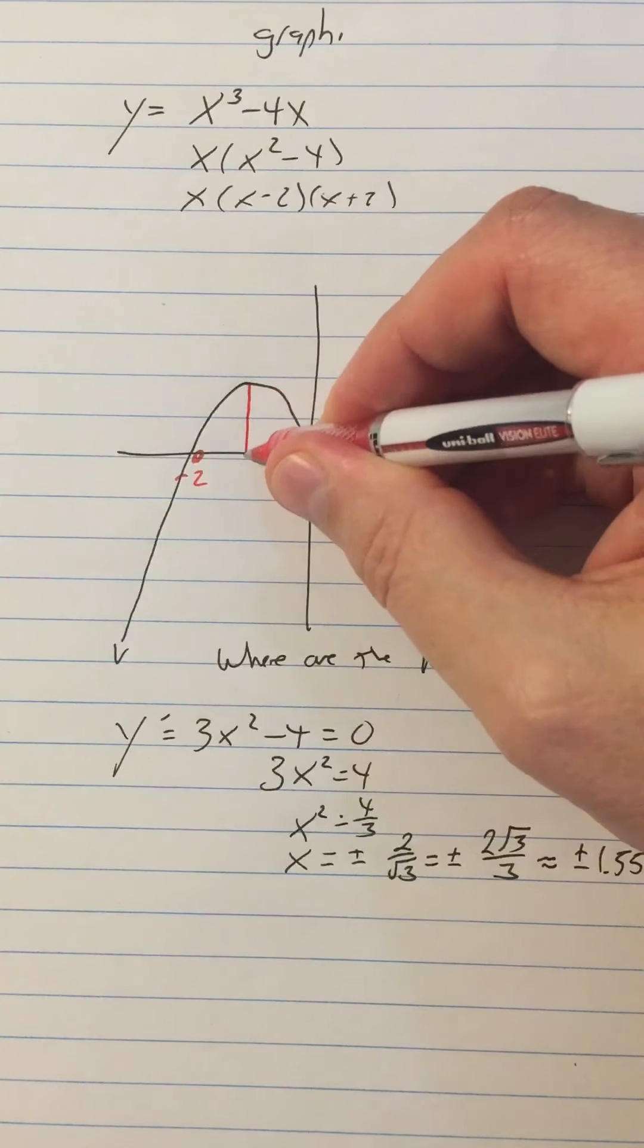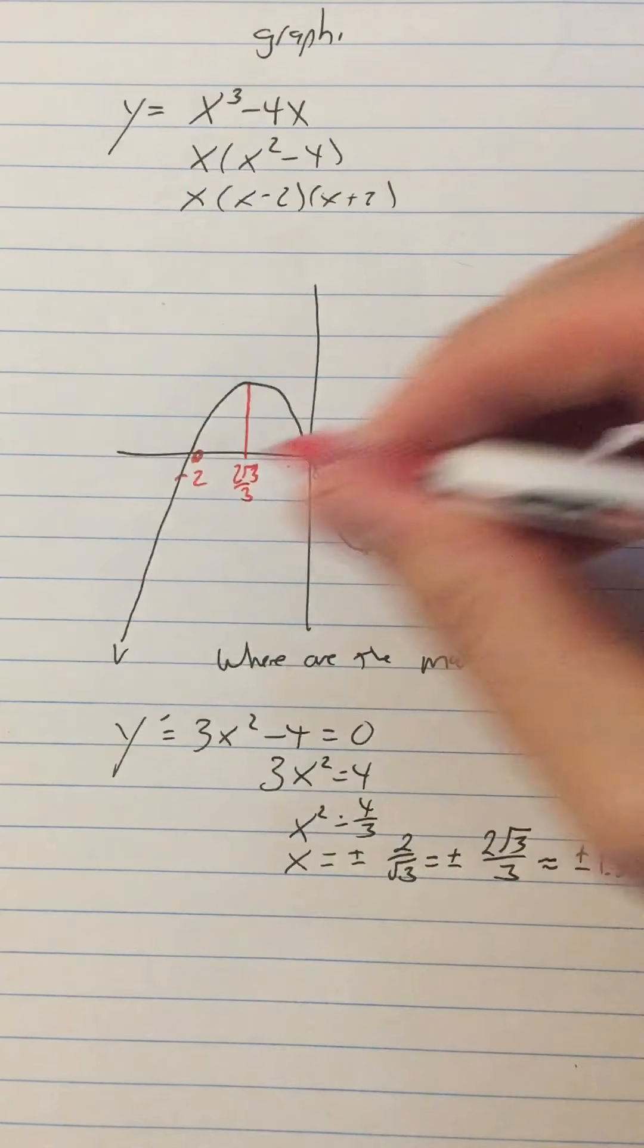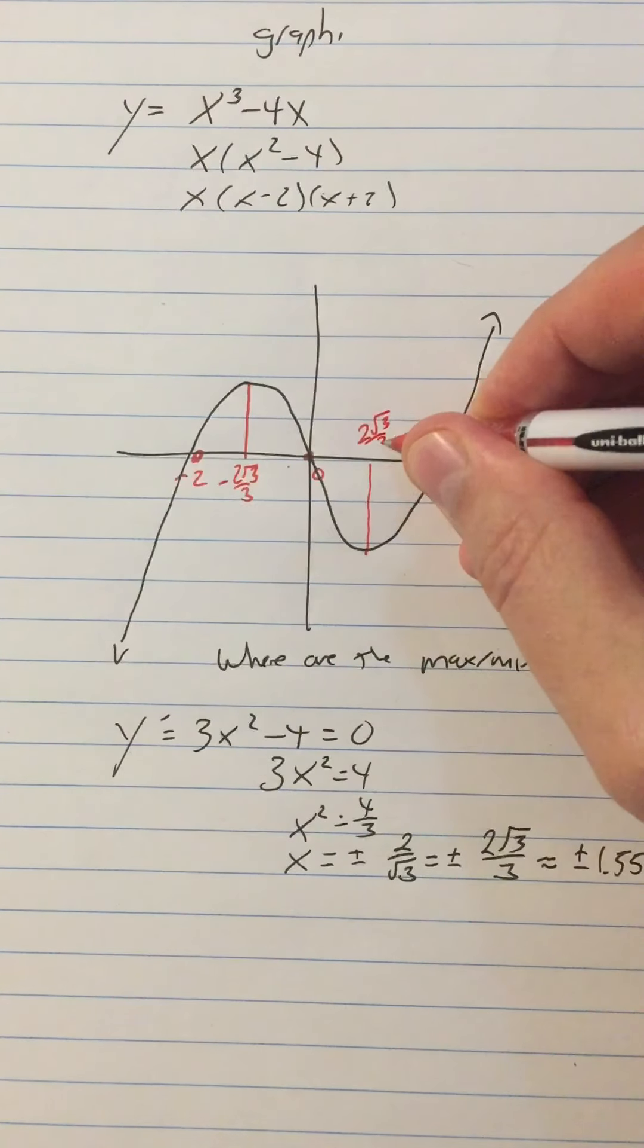1.55, 2 square root 3 over 3. That's where the max and min are. Negative 2 square root 3 over 3 and positive 2 square root 3 over 3.